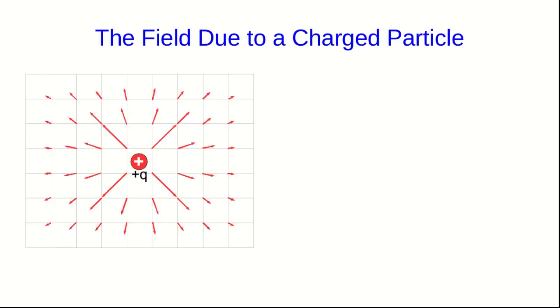So here is a field vector diagram showing the field due to a positive charge. We know that the field points away from the charge at every point and we know that it gets weaker as you move away from the charge. And of course not every possible vector is shown. I could add more vectors onto it like so.